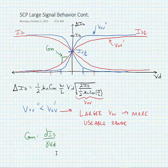In the next set of slides, we're going to look at changing the type of load we're using to an active load, to mimic what we've done earlier in our transistor amplifiers — that is, to use active loads rather than resistors in order to increase the gain.